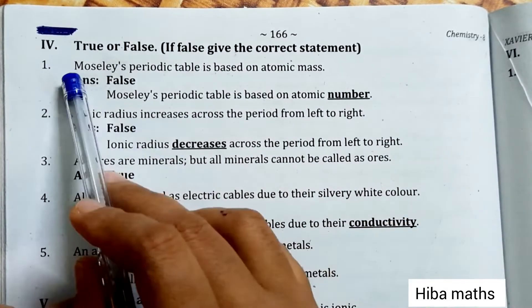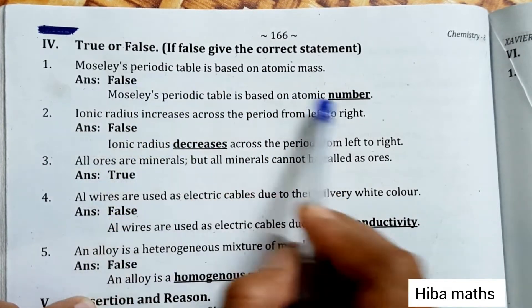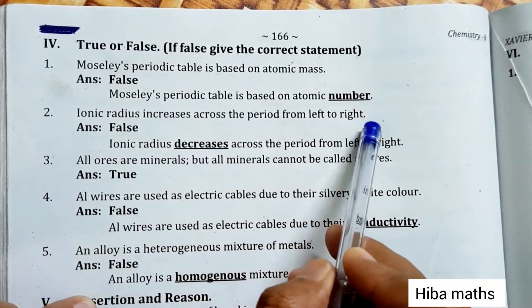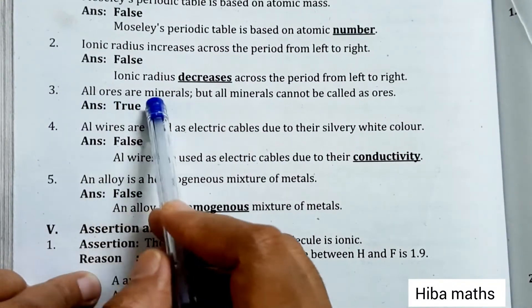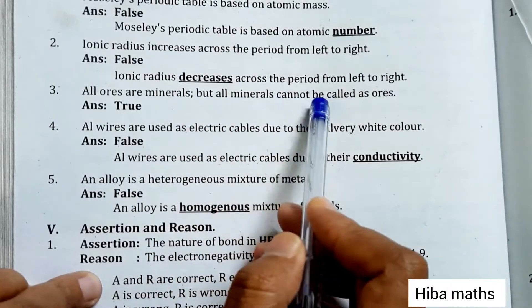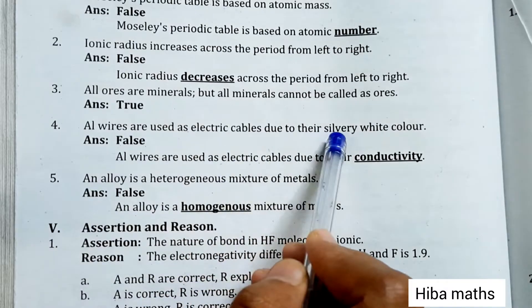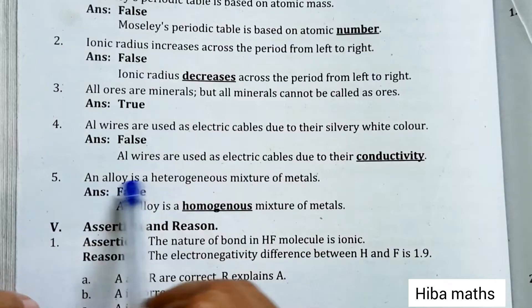True or false. Moseley's periodic table is based on atomic mass - false, it's based on atomic number. Ionic radius increases across the period from left to right - false, it decreases. All ores are minerals, but all minerals cannot be called as ores - true. Aluminum wires are used as electric cables due to their silver white color - false, due to their conductivity.